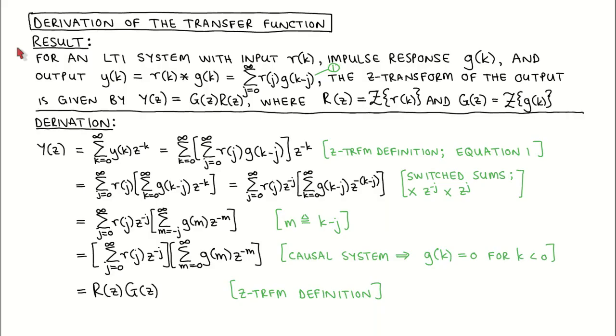The result we want to derive is the following. Suppose we have a linear time invariant system with an input R, its dynamics described by the impulse response G, and the output signal is called Y. We have previously seen that we can calculate the output signal by calculating the convolution sum of the input and the impulse response.